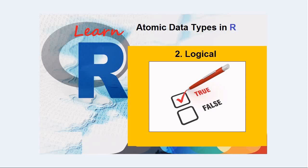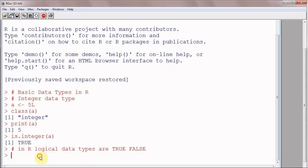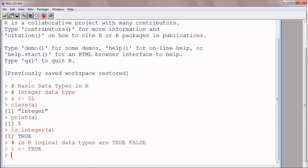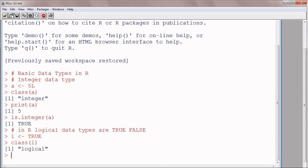The next data type is logical data type. Logical data type is a special data type with only two possible values, true and false. Now writing a logical, I is a variable that stores true, all capital, and class of I, checking the class of I, is logical.